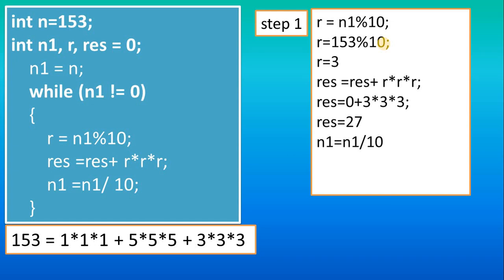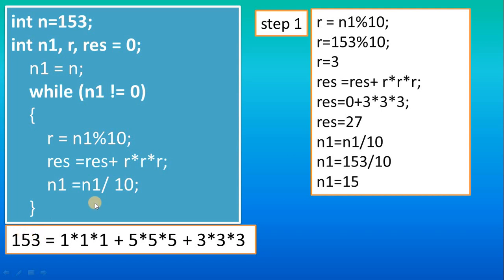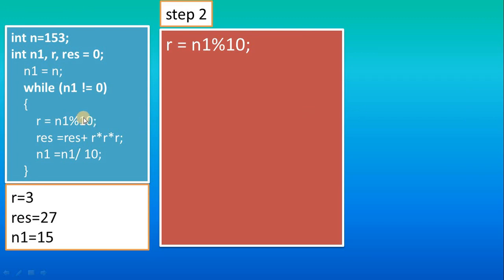Next, n1 = n1 / 10. The current n1 value is 153, so 153 divided by 10 gives the quotient 15. We calculate this quotient because we want to get the next remainder, which is 5, and then after that 1. That is why we divide the number by 10 each time — to extract the last digit as remainder. This is the Step 1 logic; if you understand Step 1, you can understand the remaining steps.